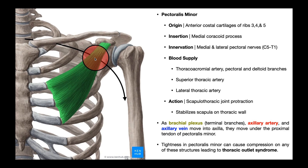So what would happen if the pectoralis minor muscle was tight? If the pectoralis minor is tight, it's possibly going to compress the contents going through the pectoralis minor space. You're going to have compression of those terminal nerve branches from the brachial plexus, compression of the axillary artery, compression of the axillary vein, and you'll see very similar manifestations as with the scalene situation. Tightness in the pectoralis minor can cause compression on any of those structures and produce the symptoms of thoracic outlet syndrome.